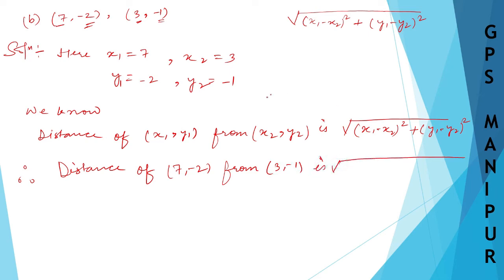so here instead of x1 we are going to put 7. So 7 minus x2, that is 3, 7 minus 3 whole square plus y1, y1 is minus 2, and y2 is minus 1. So minus 1 whole square.